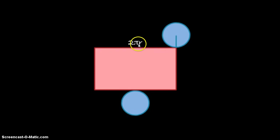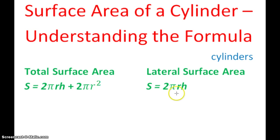You can see that 2πr is how we find the circumference of a circle. You can also call that pi times diameter, but in our formula it is written as 2πr. So 2πr would give us this distance right here — the circumference of the base — times the height. So let's go back and look at our formula: for lateral surface area, 2πr represents the circumference of the base.